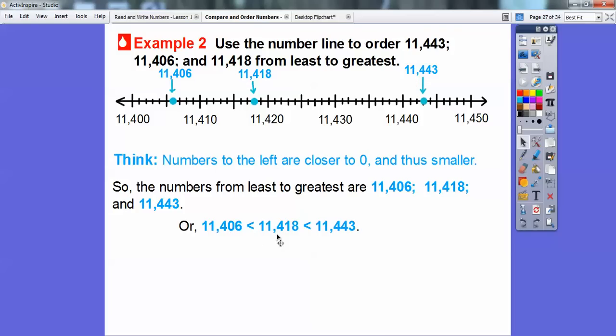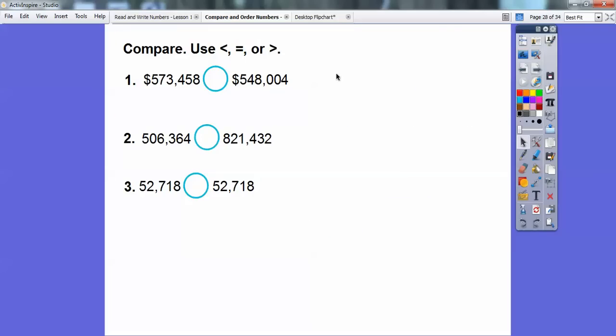Let's use less than, equal, or greater than symbols to compare these numbers. Compare the first digits to the left. Those are equal, so move over to this digit. Since seven is greater than four, then 573,458 is greater than 548,004. Here, five is less than eight, so 506,364 is less than 821,432. Now look at these ones: 52,718 and 52,718 - those guys are equal.